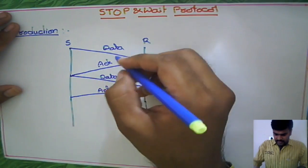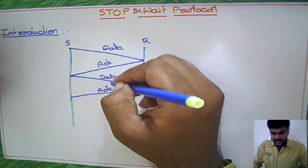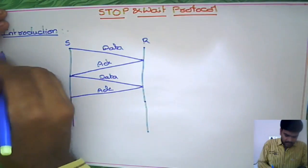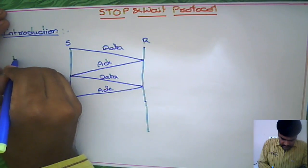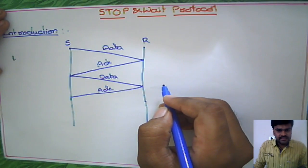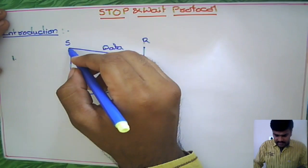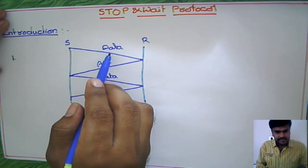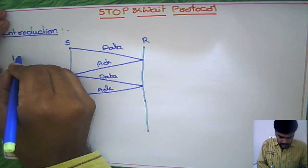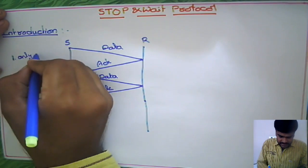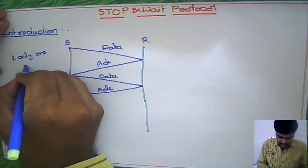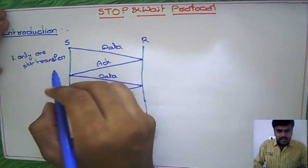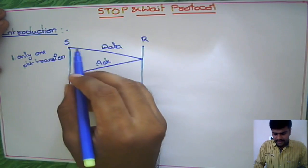If you observe here, there are two points from the sender side and two points from the receiver side. The first point from the sender side is: at any point of time, the sender has to send only a single packet — always only one packet.